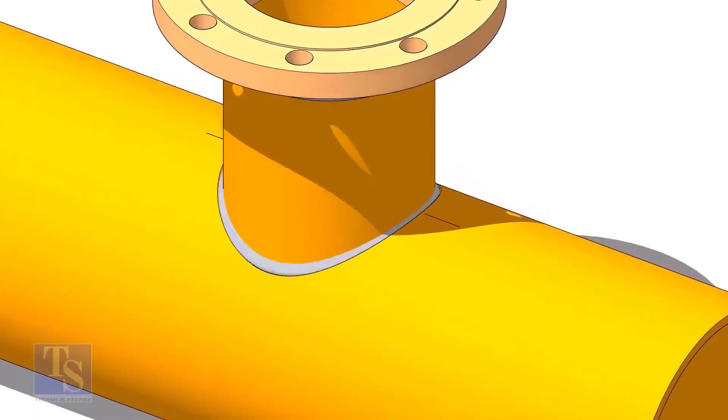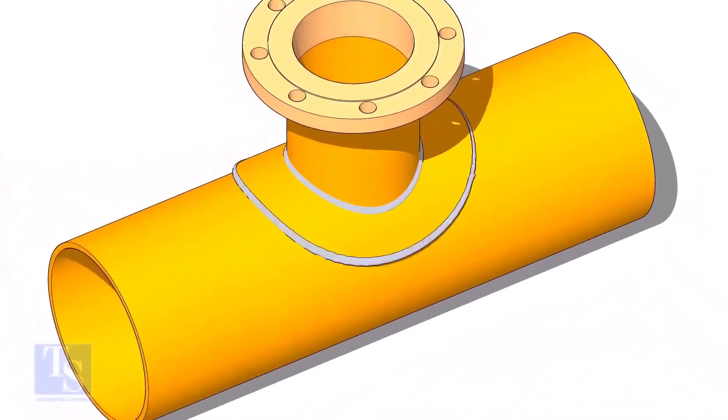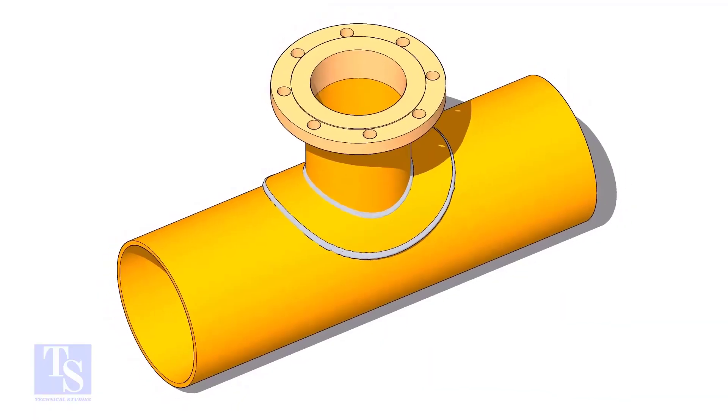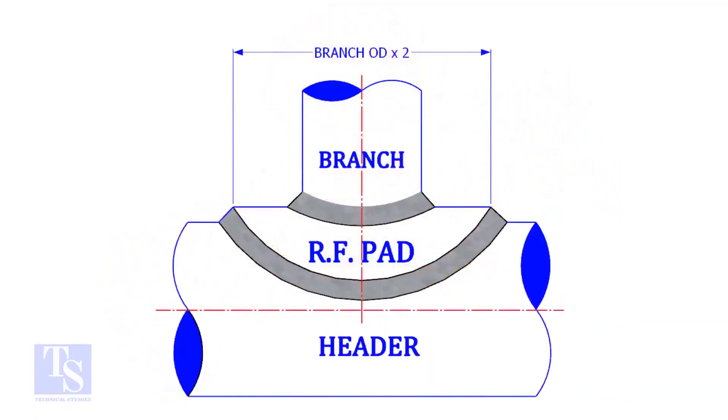A reinforcement pad or RF pad is used to strengthen the fabricated or welded pipe branch connection joints. Usually, the outer diameter of an RF pad is double the OD of the branch pipe.